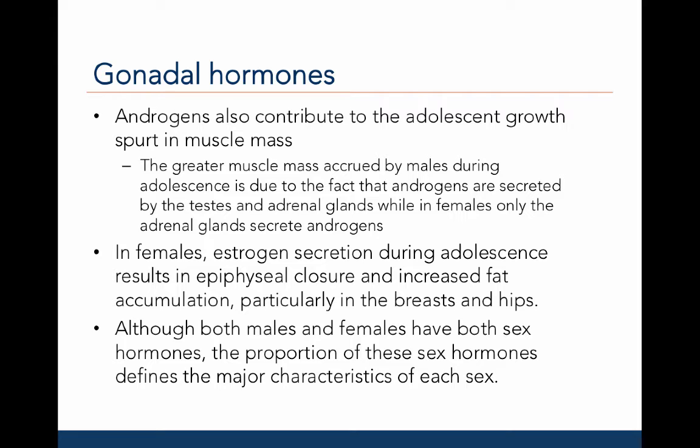Androgens also contribute to the adolescent growth spurt in muscle mass. The greater muscle mass accrued by males during adolescence is due to the fact that androgens are secreted by both the testes and adrenal glands in males, while in females, androgens are only secreted by the adrenal glands. In females, estrogen secretion from the ovaries and adrenal glands results in epiphyseal closure and increased fat accumulation, particularly in the breasts and hips. Although both males and females have both sex hormones, the relative proportion of androgens and estrogens defines the major characteristics of each sex.